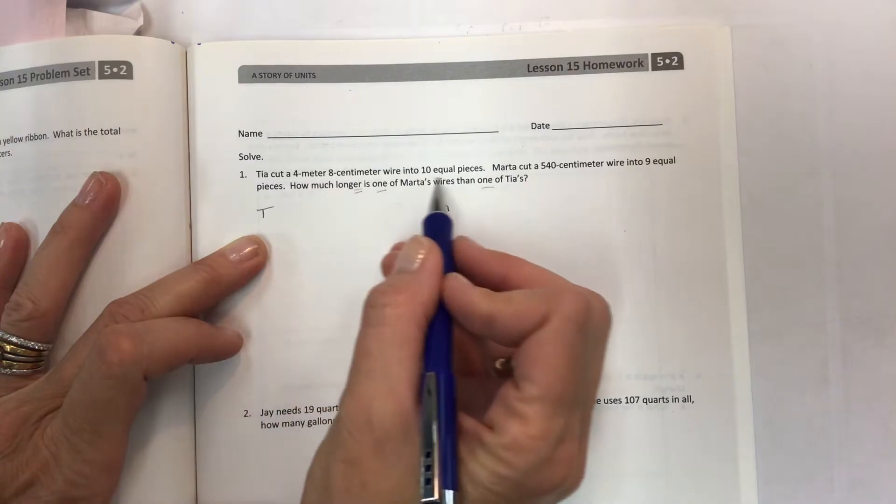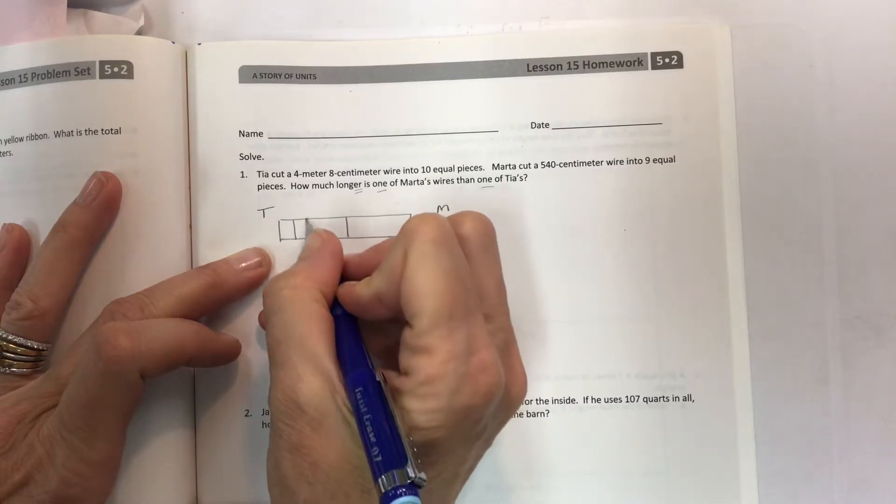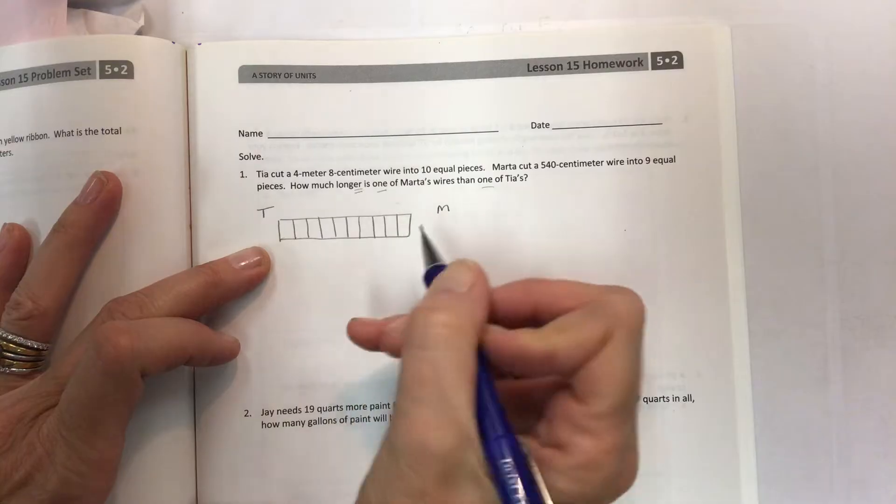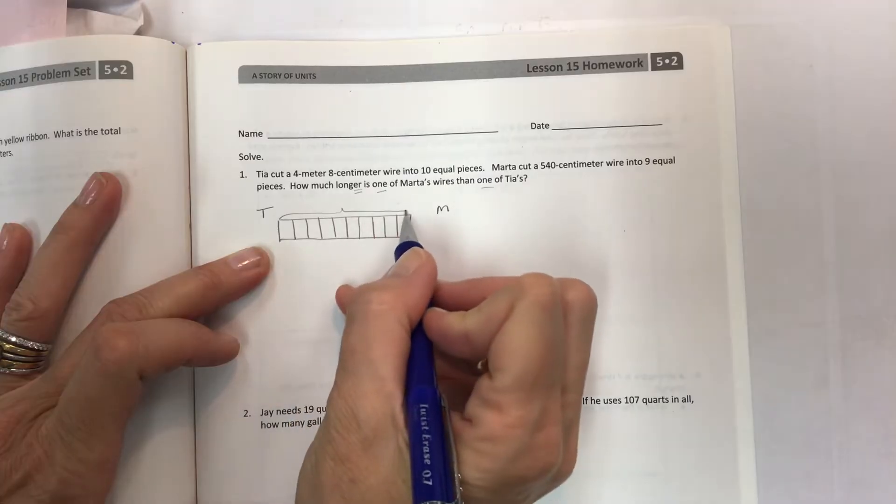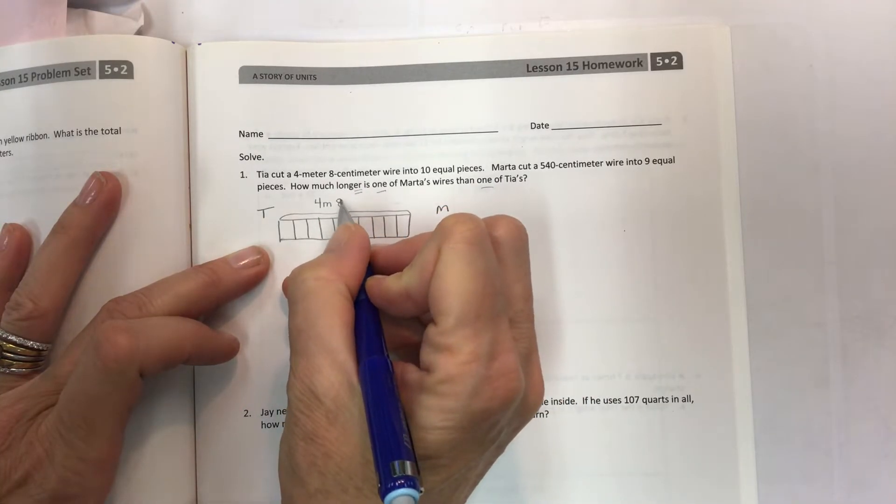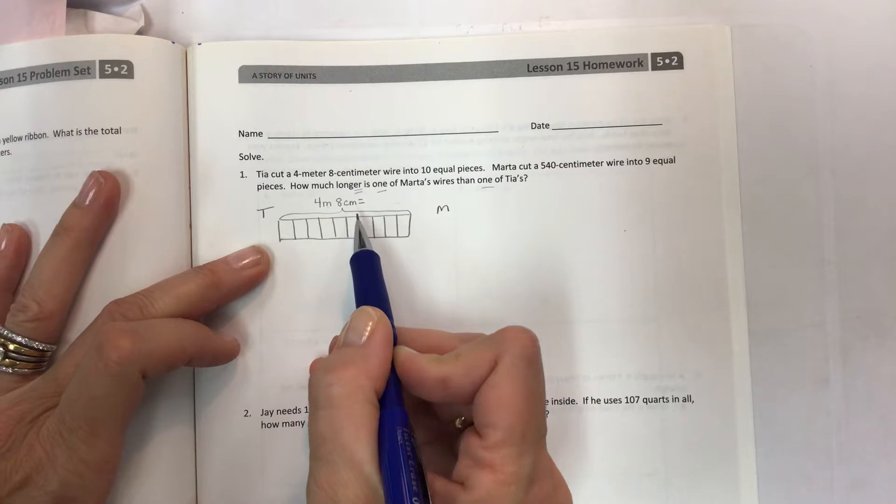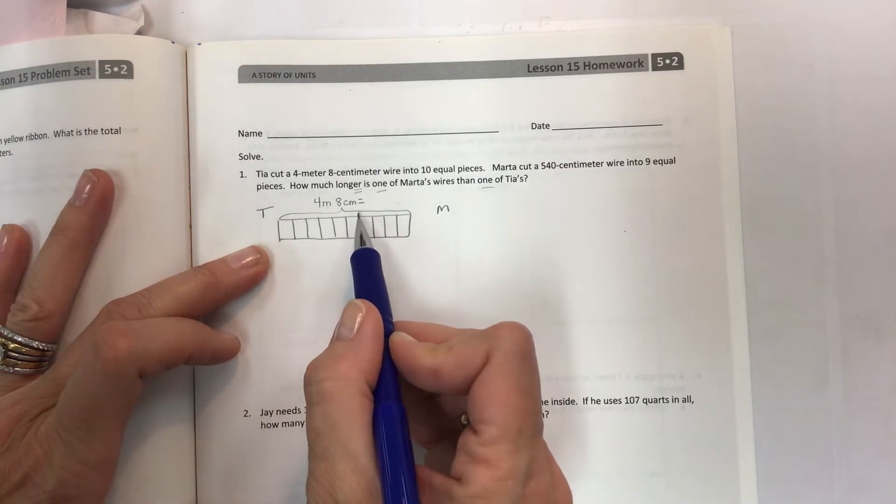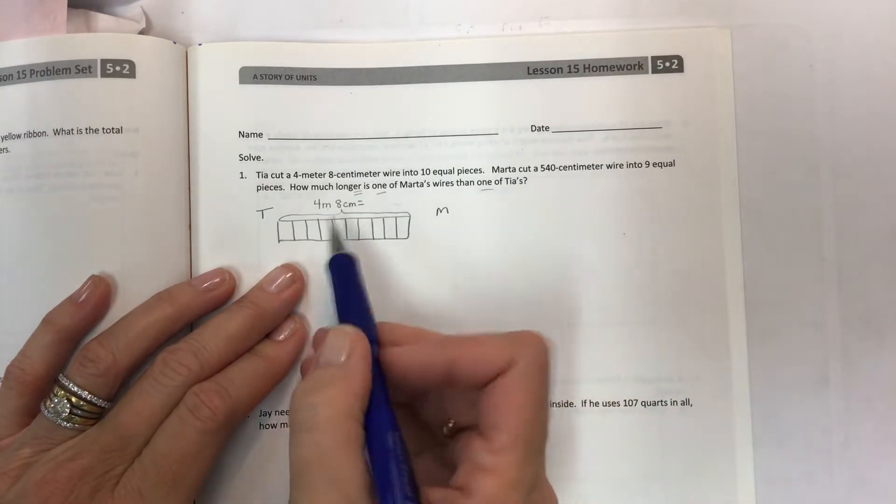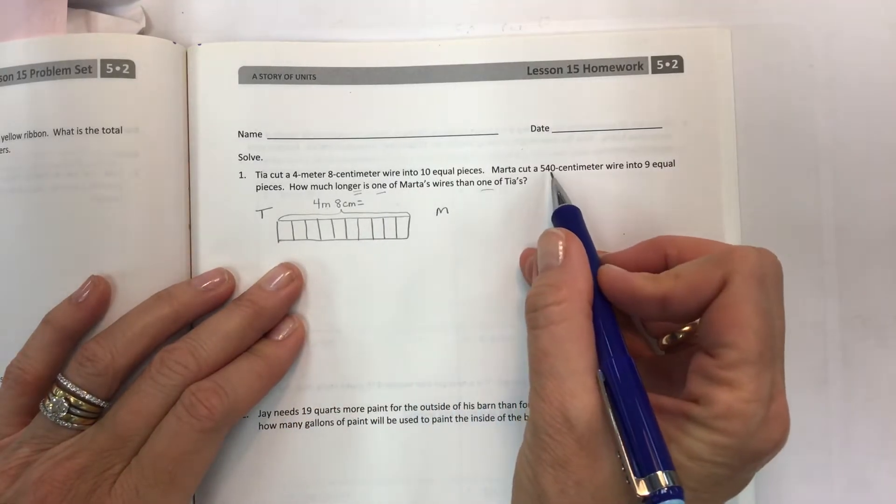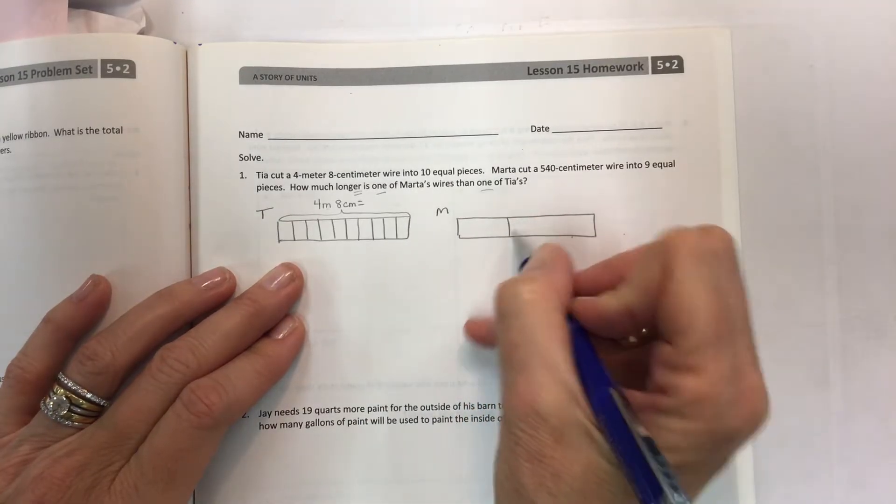Tia has 4 meters 8 centimeters and 10 pieces. So make a tape diagram, split it in half and put five on each side. Make sure you have 10, count the boxes. And this whole thing is 4 meters 8 centimeters. So Marta cut the 540 into nine equal pieces. So we're going to have three sections of three.